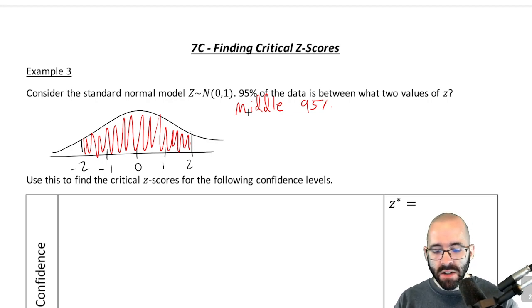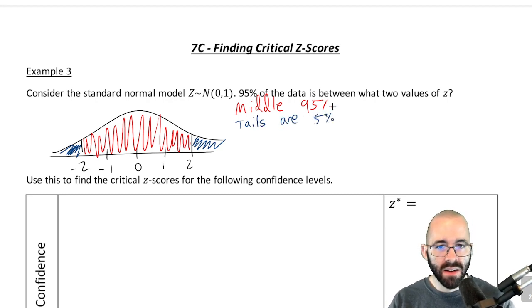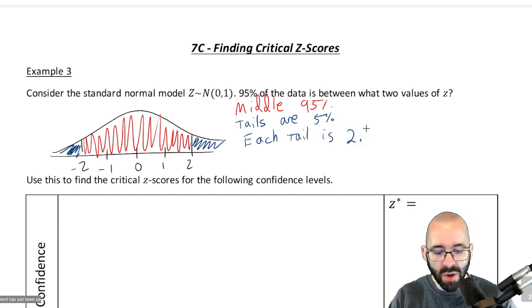Well, if you remember in that section, the way that we answered this question is we said that if red is 95% of the area, then the blue tails together should be 5%, right? The tails must be 5% because that adds up to 100%. So each tail then is half of that. They're 5% together and it's symmetric, so each tail must be 2.5%.